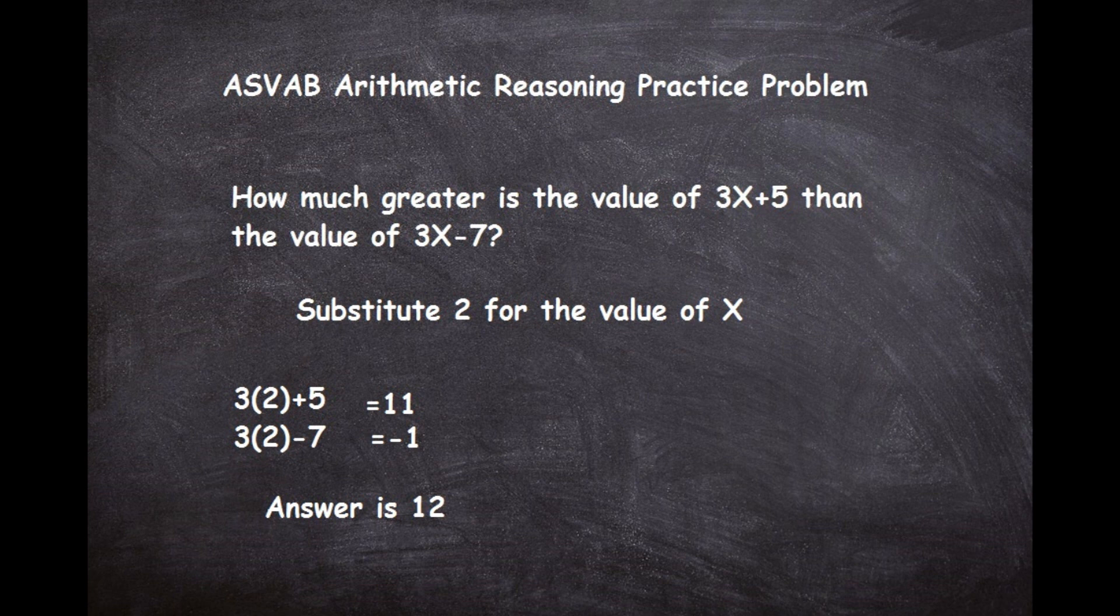Now another way you could probably do this is you could just look at the two equations and you can say if we have a number and we add 5 to it, and then we take that same number and we subtract 7 from it, the spread is going to be 12. Because if you go up 5 you have to go back 12 to get to negative 7. So if you could see it that way that might be a quicker way to solve it, or just do the quick math in your head. Like if you substitute 1 in for X that would make 3 plus 5 which would be 8, and then the second one 3 minus 7 which would be negative 4. So we know 8 is 12 greater than negative 4.